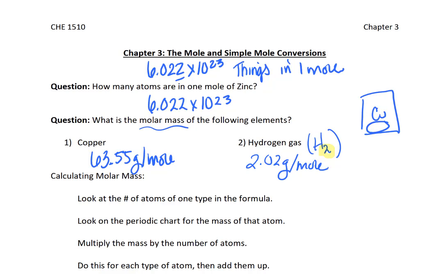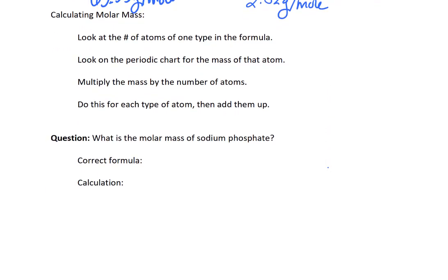Figuring out what the molar mass is is really important. So we're going to do it for a bigger chemical formula now. Let's look at sodium phosphate. In order to figure out the molar mass for sodium phosphate, you first need the correct formula for sodium phosphate. So this is like a little nomenclature problem. Remember that sodium has a plus one charge. Phosphate is PO4 3 minus. So you need three sodiums to cancel out the three minus on the phosphate. So that's your correct formula.